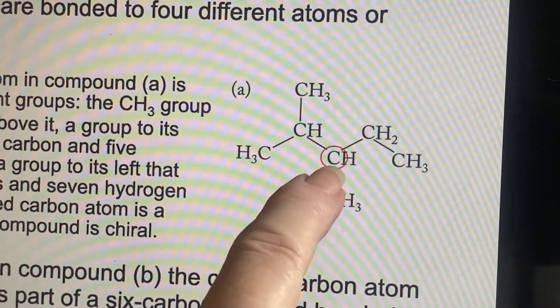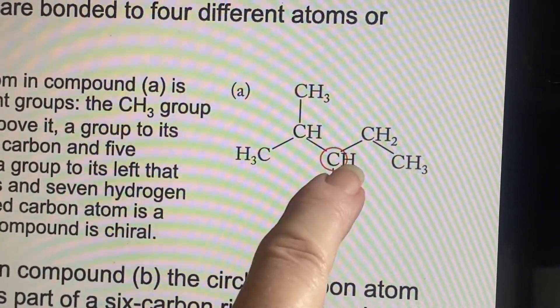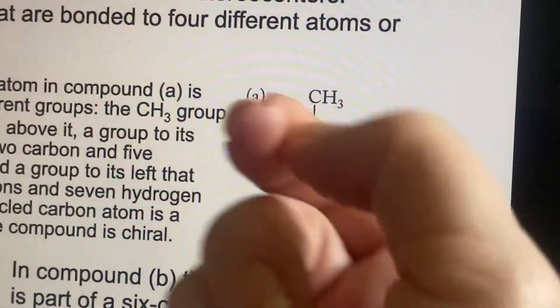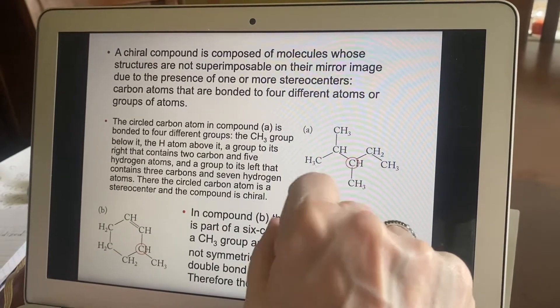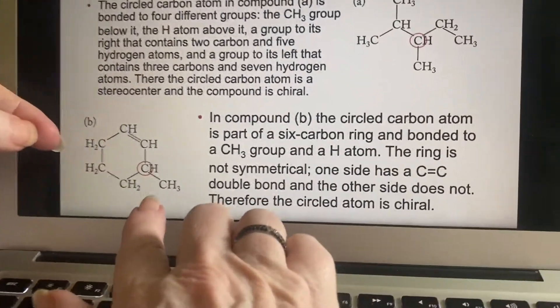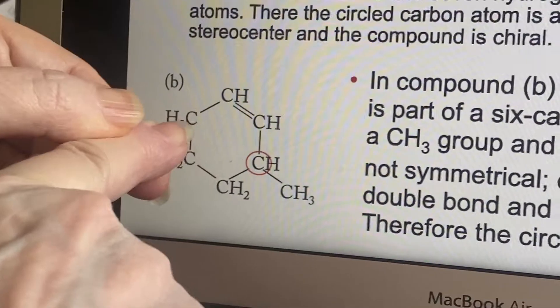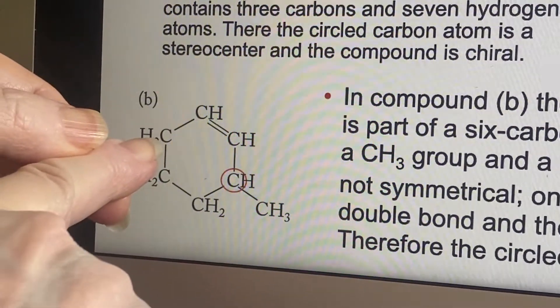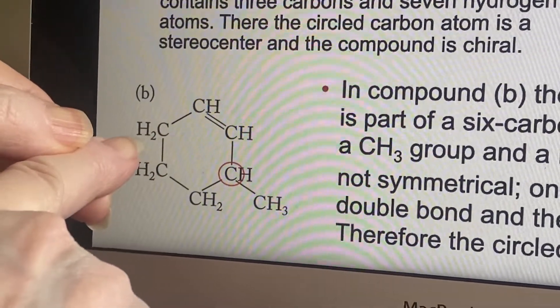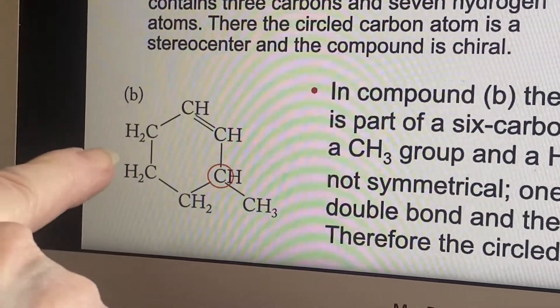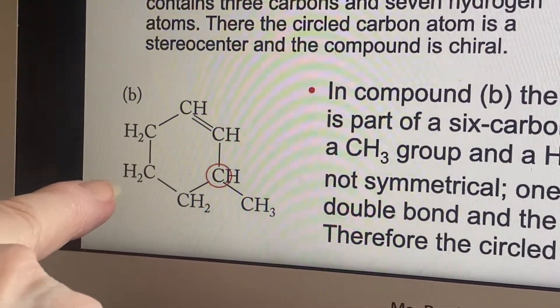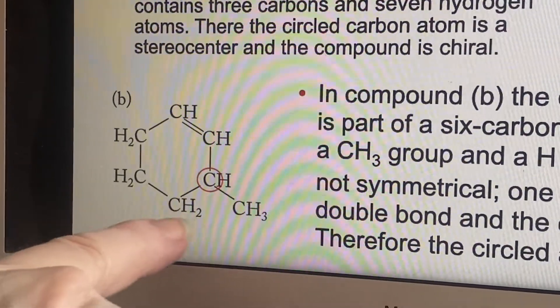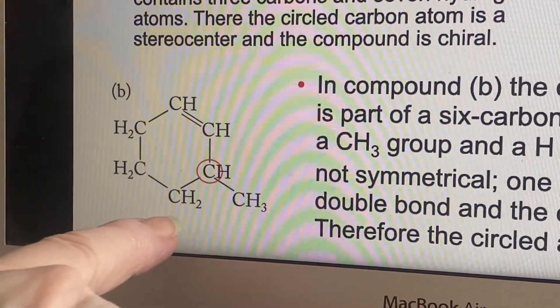And that means that we could have this hydrogen either coming up towards us or it could be going back into the screen. If we look at this guy down here, we can see this carbon is not going to be a stereocenter because it's bonded to two H's. The H's are equivalent. So as soon as you see something like that, you're like, oh, that's equivalent. This one, oh, nope, two H's. I can deal with that.